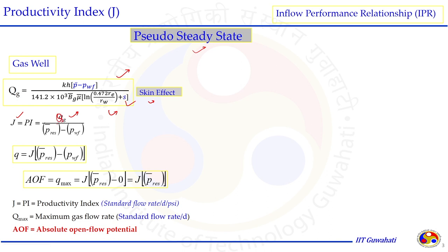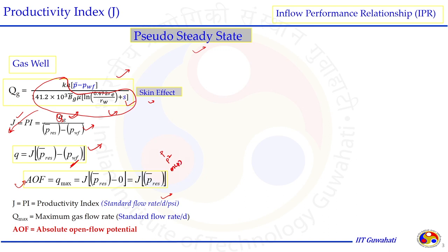The gas well IPR equation can be adjusted in the form of productivity index J, defined as flow rate divided by pressure drawdown. The flow rate Q is measured at STP condition. The unit of productivity index depends on the form of the IPR equation chosen — for the gas well we have the P approach, P-square approach, and MP approach, and accordingly the J unit is adjusted.